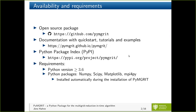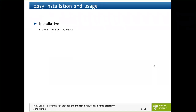You can also get the package using the Python Package Index, so you can install it using pip. There are only some requirements: you need a Python version greater than or equal to 3.6, and some Python packages which are automatically installed if you use pip. Installation is really easy — the only thing you have to do is open a bash and type 'pip3 install pymgrid'. It will take about 20 seconds, and afterwards you can try your first example.